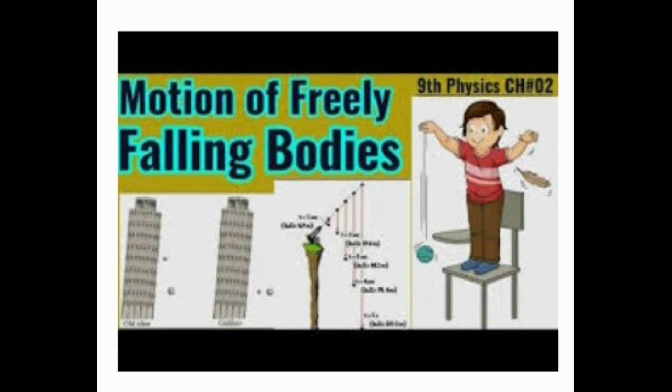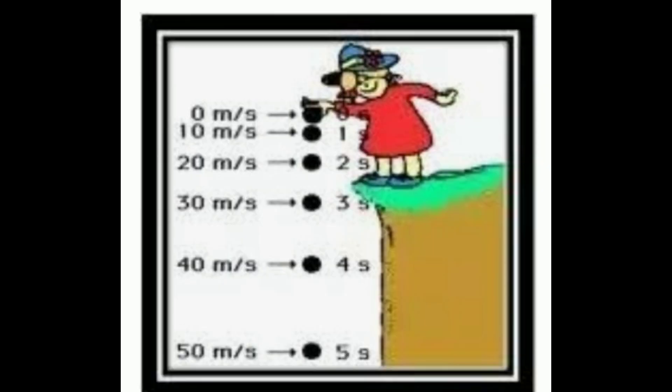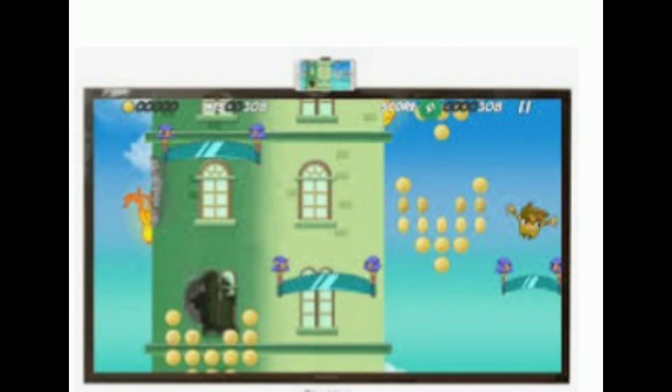You can observe that both the stone and the eraser reach the surface of the earth almost at the same time. When you drop the eraser and paper, the eraser reaches first and the sheet of paper reaches later. You can also observe the paper crumpled into a ball reaches the ground first, and a plain sheet of paper reaches later, although they have equal mass.